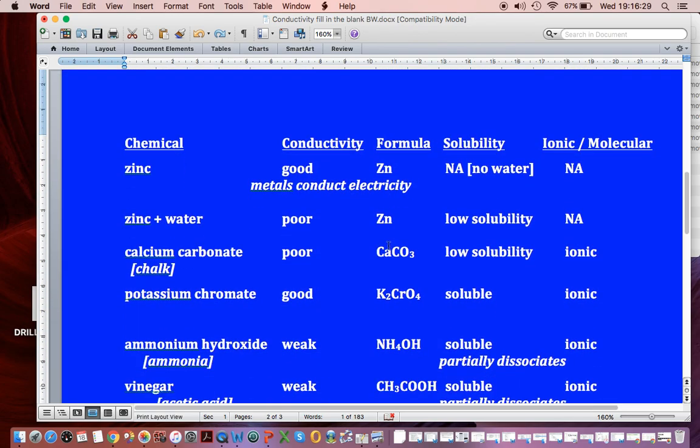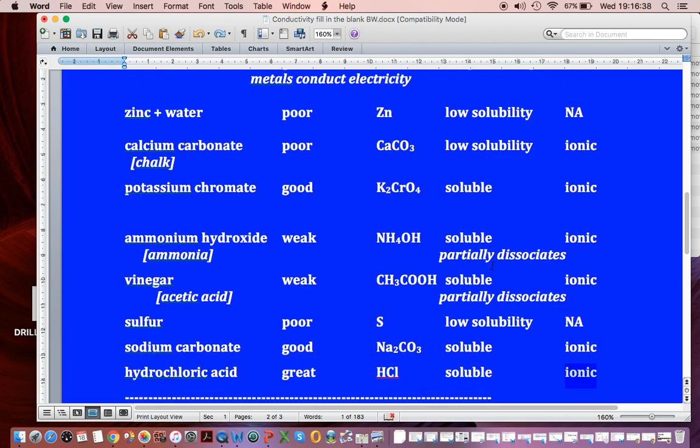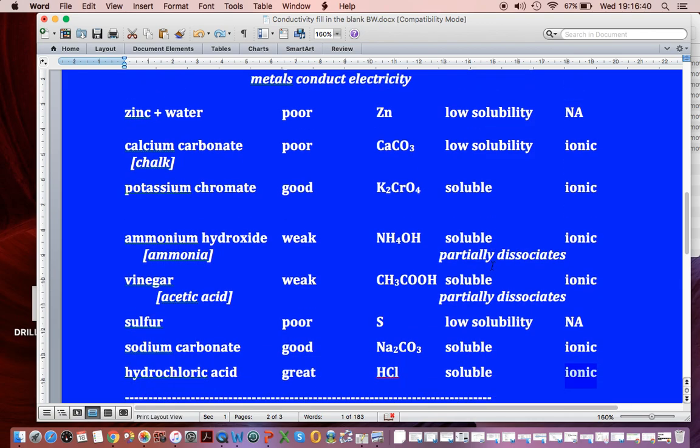And if it was low solubility, like the calcium carbonate, even though it's ionic, low solubility, it doesn't dump enough ions in there. And therefore, it is a poor electrolyte. In the next video, we're just going to put in our conclusions.